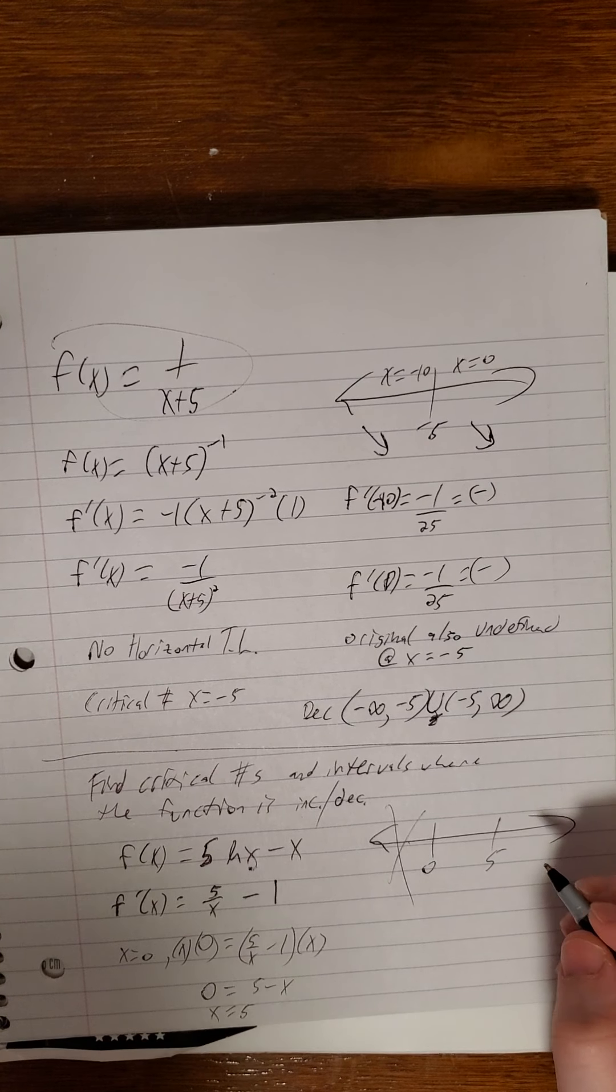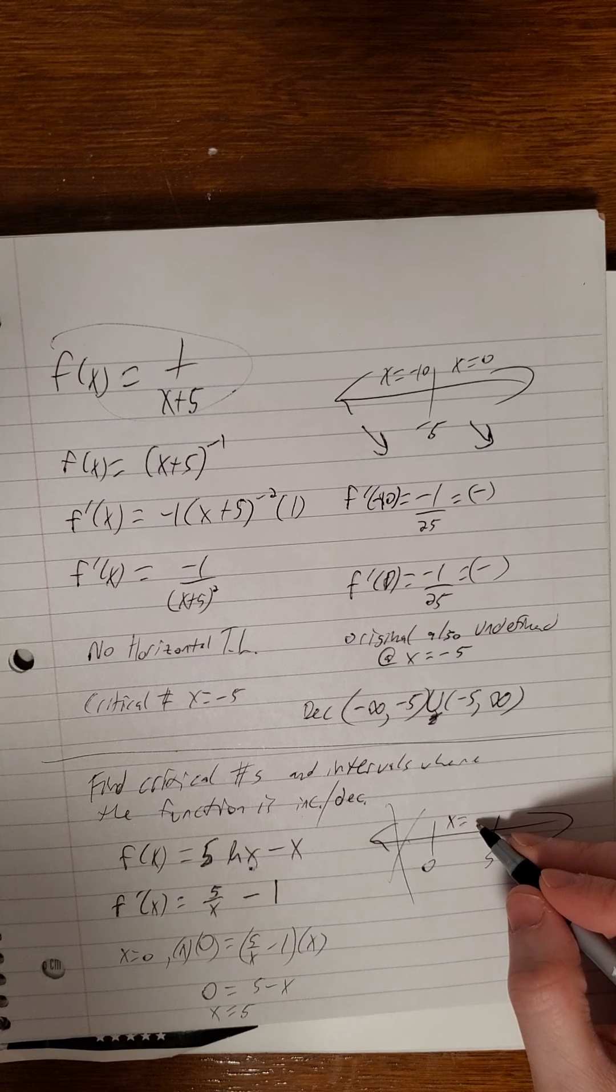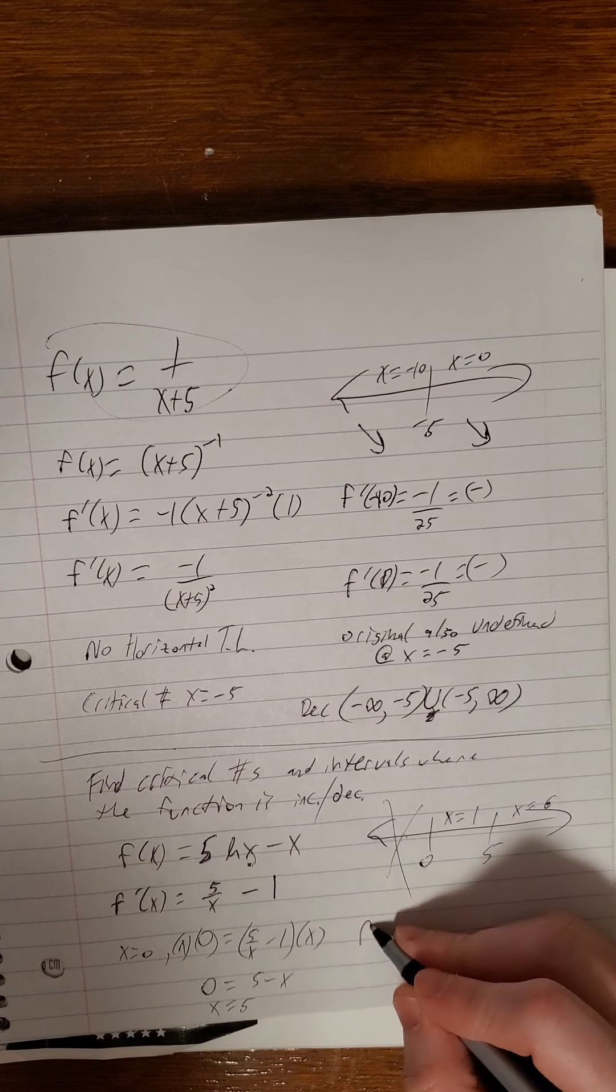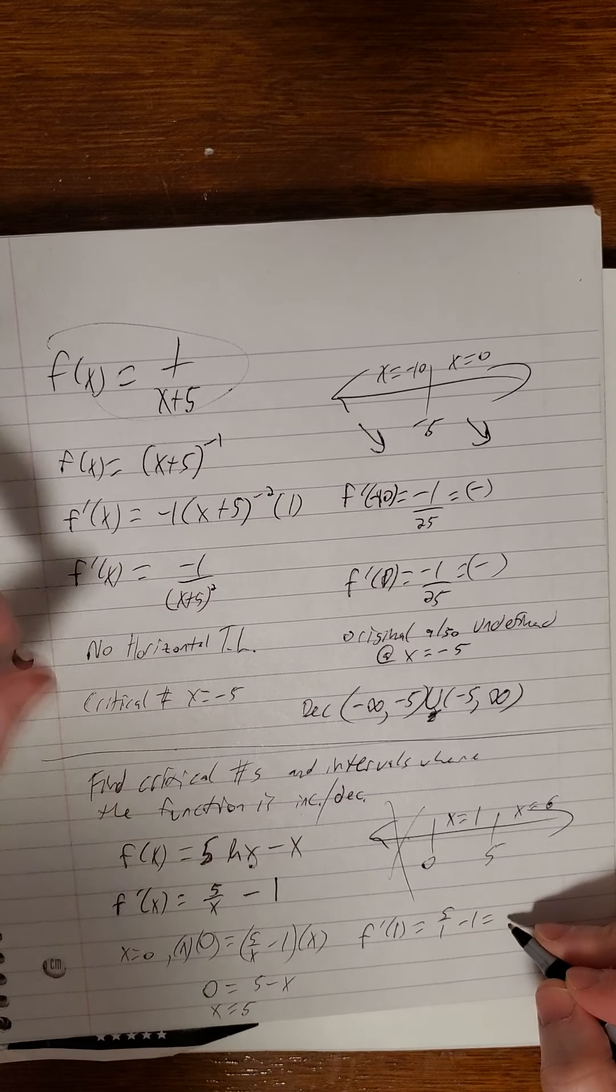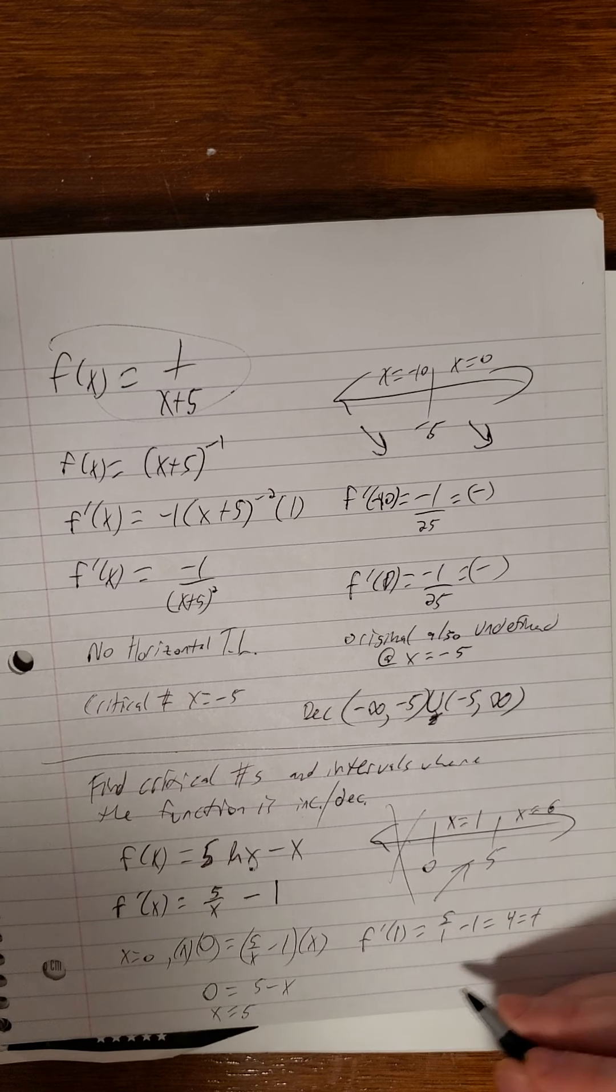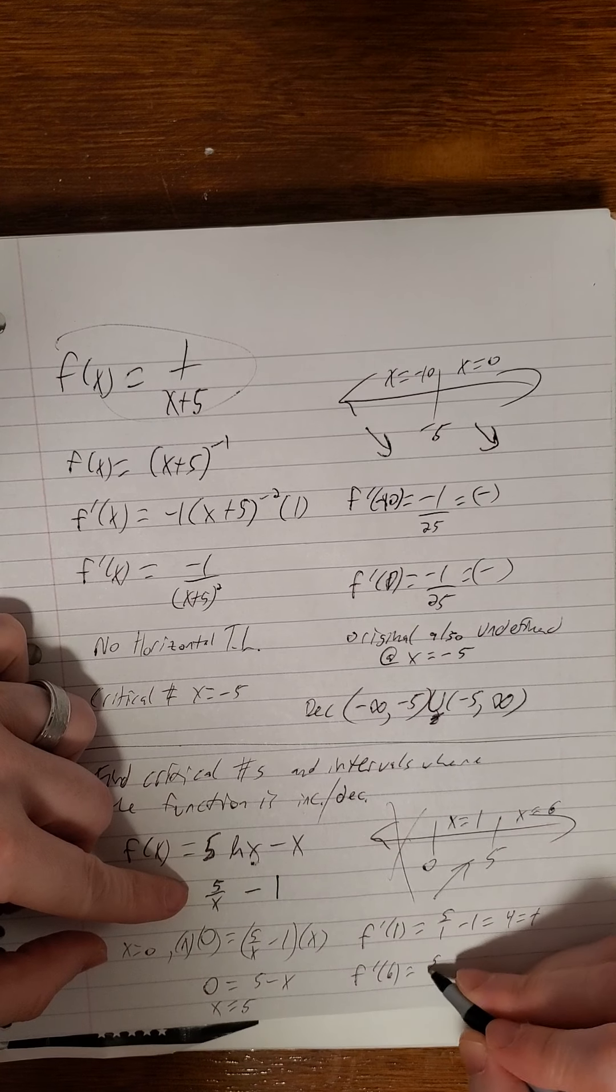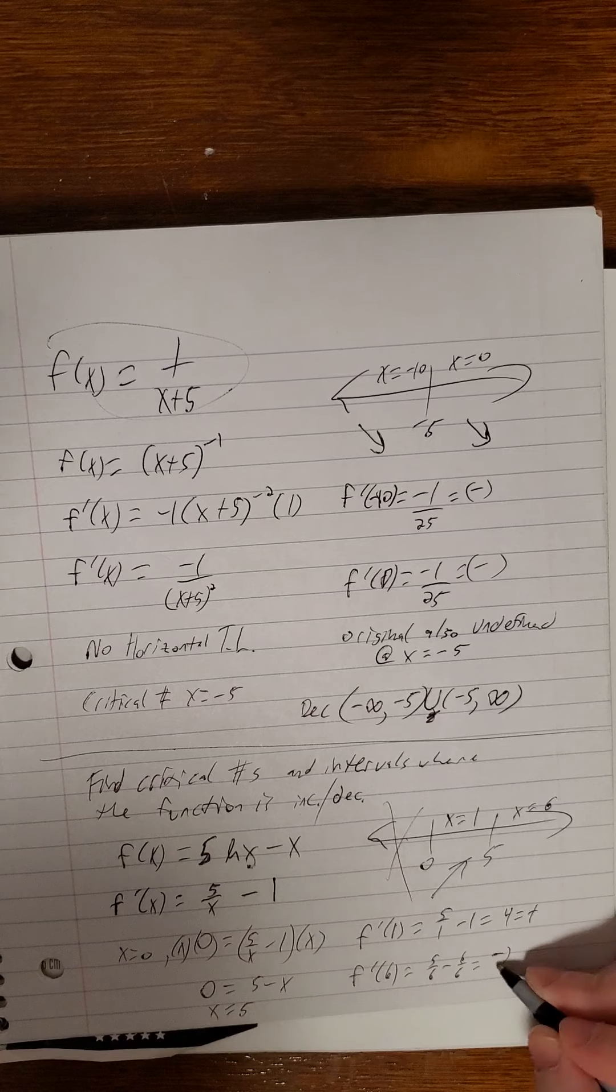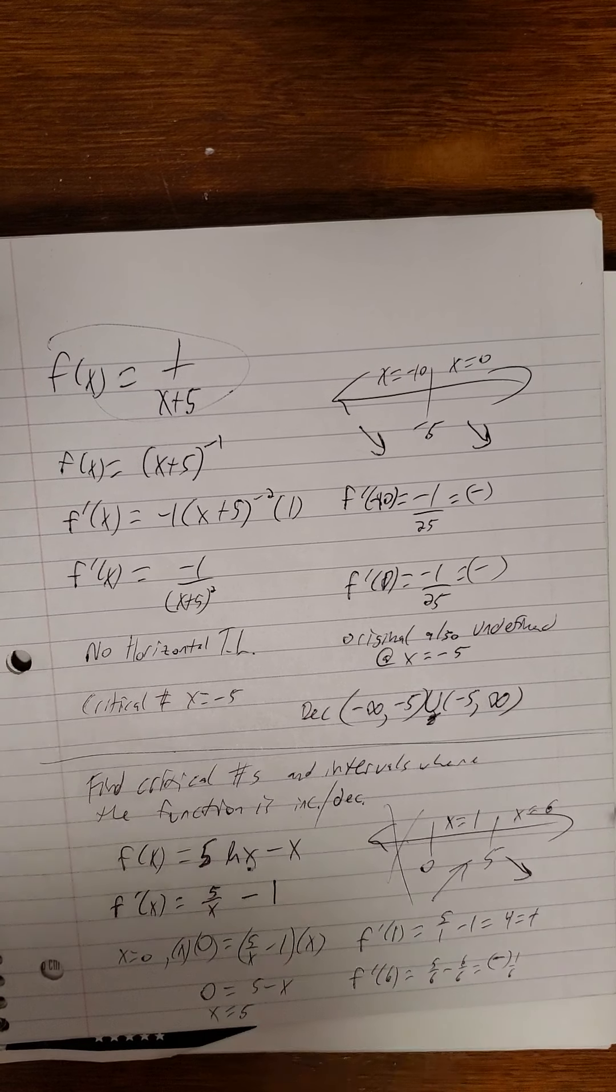So really, we just need to test two intervals then. So I'll test maybe x equals, let's do 1 and 6. So f prime of 1, so 5 over 1 minus 1. So that's a positive 4. So we are increasing on that interval. f prime of 6, 5 over 6 minus 1 is the same as 6 over 6. So that is a negative, happens to be 1 sixth. But the key part is it's negative. So we are decreasing there.